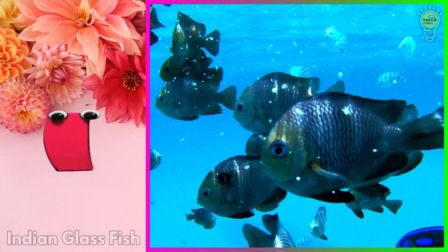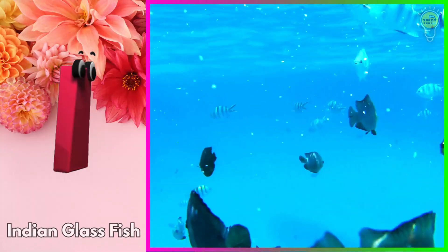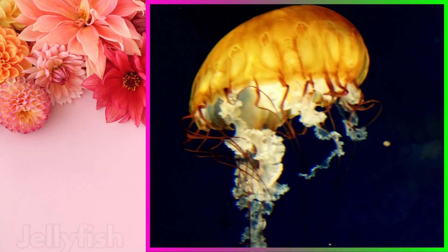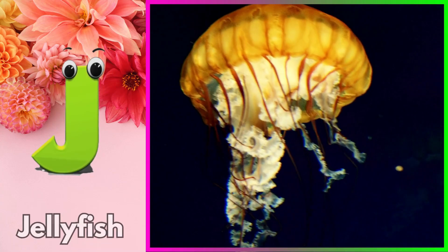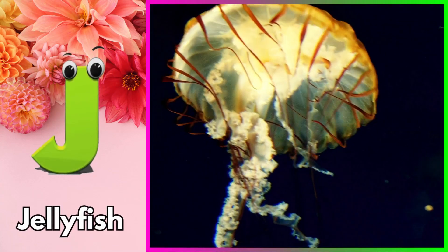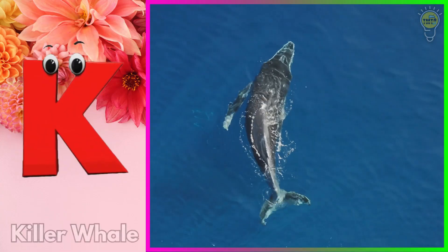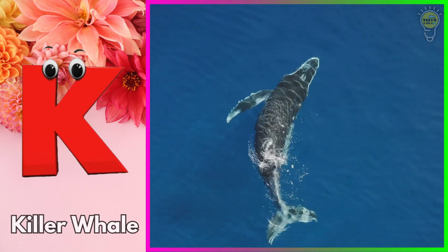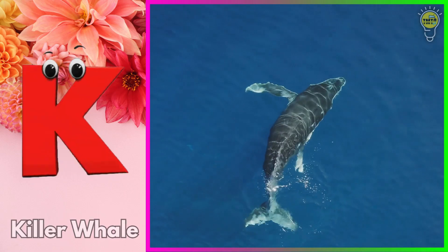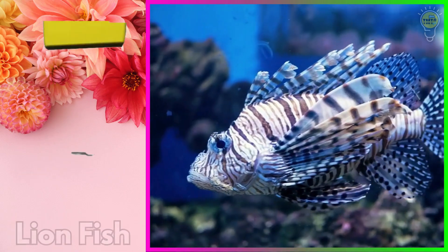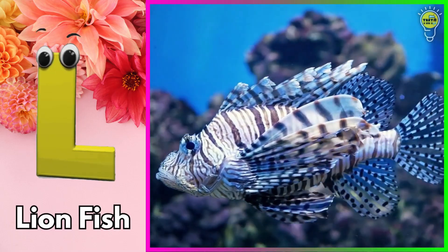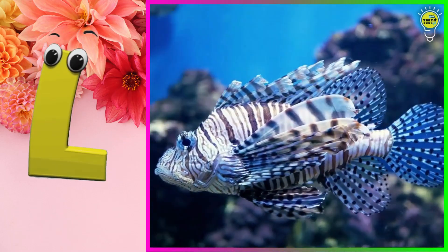I is for Indian glass fish. J is for jellyfish. K is for killer whale. L is for lionfish.